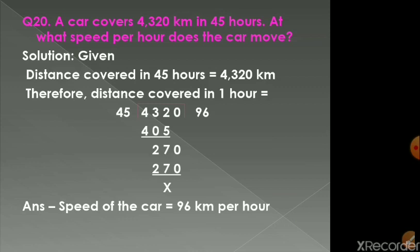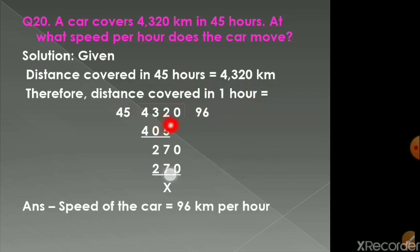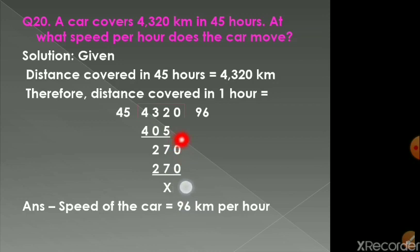Question number 20. A car covers 4,320 km in 45 hours. At what speed per hour does the car move? Distance covered in 45 hours is 4,320 km. We find distance in 1 hour: 4320 ÷ 45. Working: 45×9=405, remainder 27; bring down 0, 45×6=270, no remainder. The car covers 96 km in 1 hour.